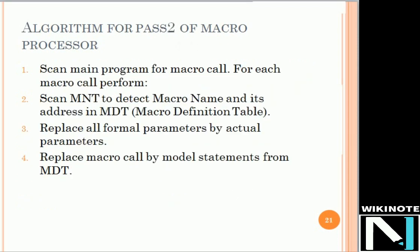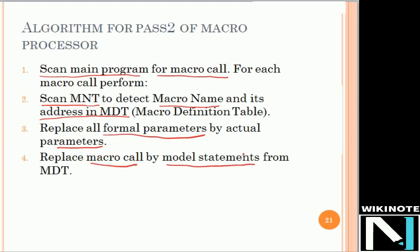Now we will see pass two for the macro processor. In pass two, we scan the main program for macro calls — checking if there is any macro call in our program. If a macro call is found, for each macro call we scan the MNT to detect which macro is being called. The MNT contains the macro name as well as its MDT address. We search the macro name, take the MDT address, then replace all formal parameters inside the MDT with the actual parameters. Finally, the macro call is replaced by the model statements containing the actual parameters.